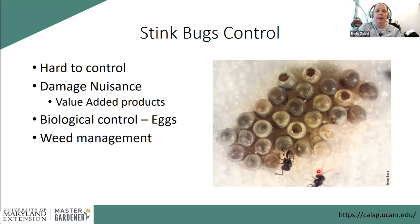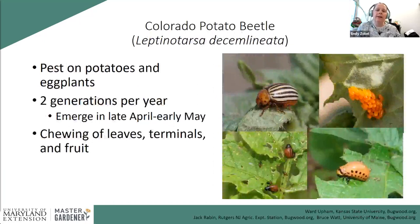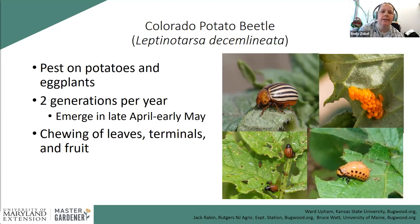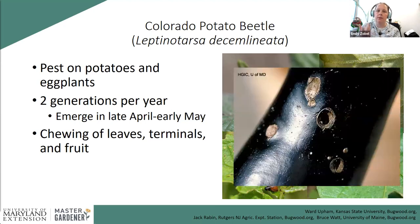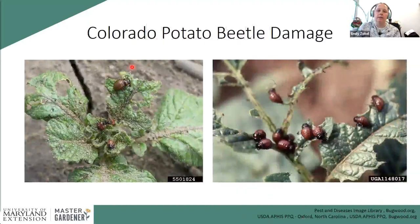For stink bug biocontrol, many parasitic wasps like to lay their eggs in stink bug eggs, so planting flowers around your crops can bring them in. Also control weeds around your garden. Colorado potato beetle is a pest on both potatoes and eggplants — if you've grown either, you've likely encountered it. It's a native insect and a voracious feeder. We typically get two overlapping generations per year, with the first generation emerging around April–May right now.